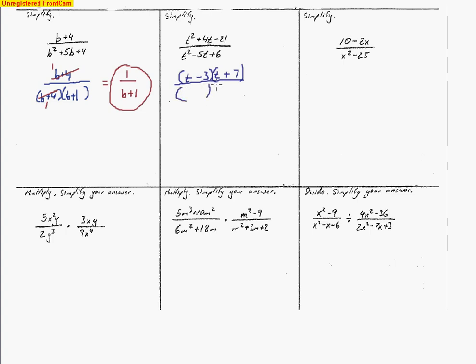The denominator factors to two binomials: (t − 3) and (t − 2). They had to be the same sign because they multiply to make a positive 6 and had to make a negative 5. So we can go ahead and cancel out those common terms. The (t − 3) factors cancel, leaving us with (t + 7) on top and (t − 2) on the bottom.